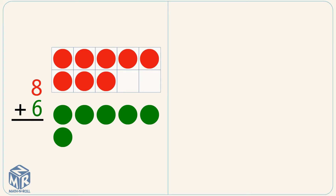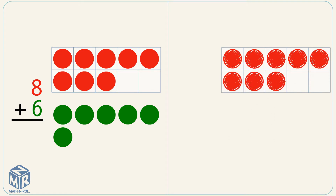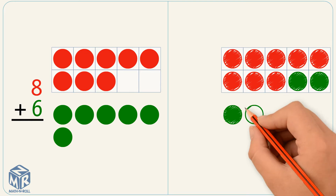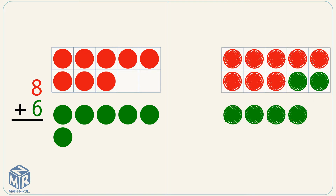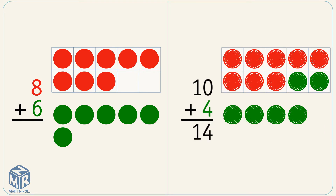8 plus 6. Let's use the make a 10 strategy to add. We have 8 red counters inside the 10 frame and 6 green counters outside the 10 frame. Let's make a 10 using another 10 frame. We always start with a bigger number because it's closer to 10 and it makes it easier to use the strategy. We already have 8 red counters. To make a 10, we need 2 more. So we add 2 green counters to make a 10. Now we have 10 inside the 10 frame and 4 outside the 10 frame. 10 plus 4 equals 14. So 8 plus 6 equals 14.